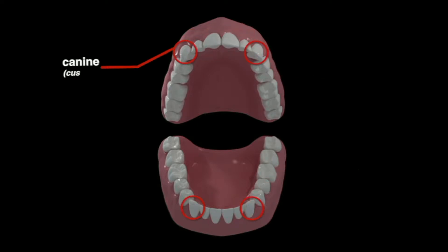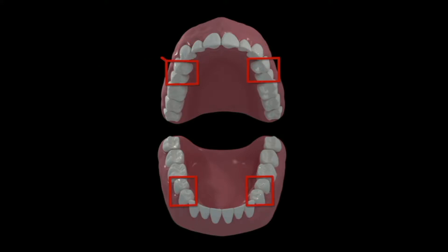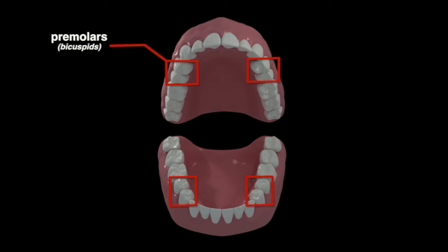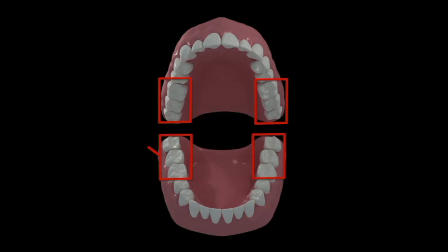Canine teeth are also known as cuspids. They have a single pointed surface called a cusp, which they use to tear and shred food. Premolars, also known as bicuspids, are between the canines and the molars, and they crush and grind food. Molars, at the back of the mouth, serve the same purpose using three or four blunt cusps.